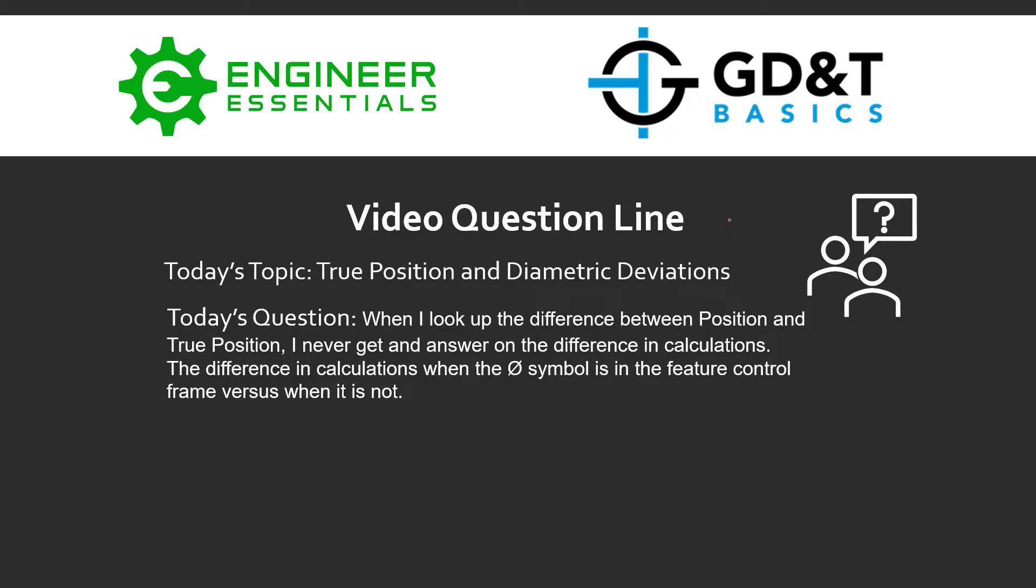Today's topic is true position and diametric deviations. The question submitted was, when I look up the difference between position and true position, I never get an answer on the difference in calculations. The difference in calculations when the diameter symbol is in the feature control frame versus when it's not.